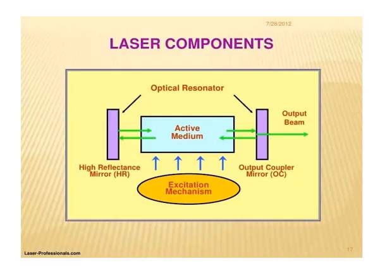Here is a figure showing the laser components. You can see the active medium or laser medium, then the excitation mechanism or energy source, and the resonator chamber made up of the active medium. At both ends you can see a high reflectance mirror, and on the right side there is a partial reflectance mirror which serves as the output of the beam.